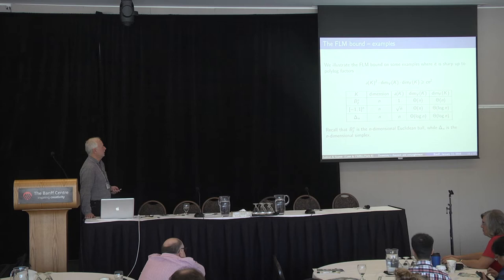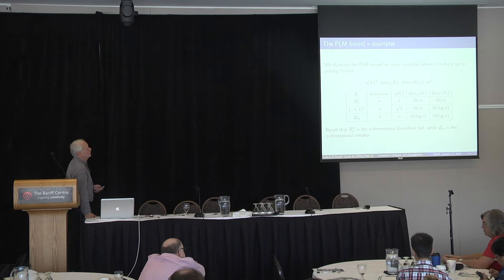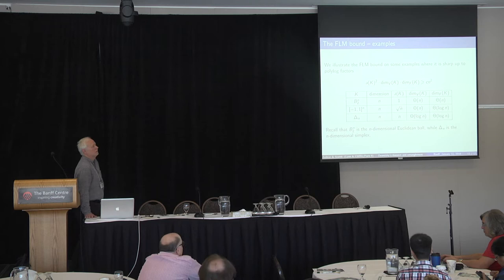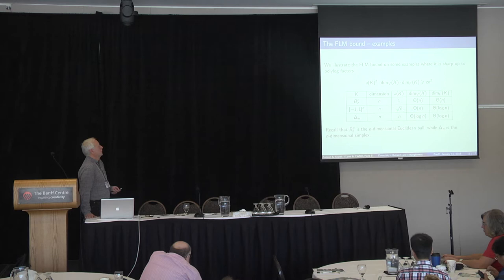Whenever we take a ball, the dimension is N. Both the vertical and facial dimension are theta of N — exactly of order N — and sphericity is of course one. So we get essentially equality, the correct order.